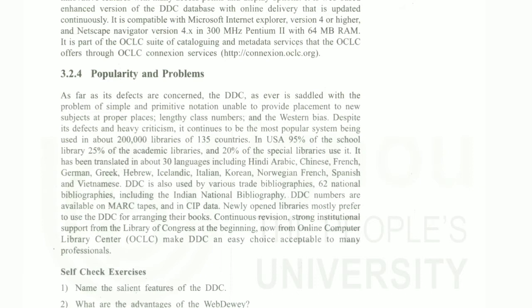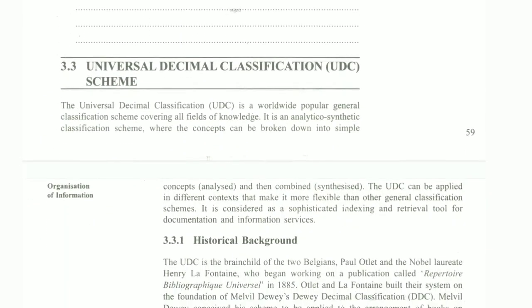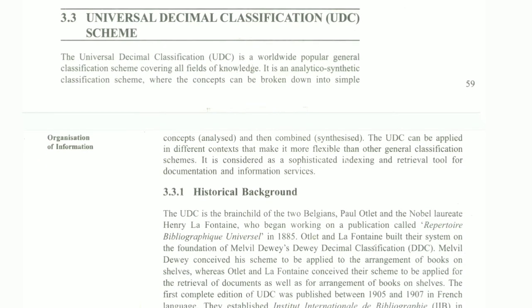Regarding popularity and problems — the DDC is encumbered with problems of simple and primitive notation, subject placement, largely long class numbers, and a Western bias. Despite its defects and heavy criticism, it continues to be the most popular system. It is used in 20,000 libraries in 135 countries. In the USA, 90% of school libraries, 25% of academic libraries, and 20% of special libraries use it. It is also widely used in India.